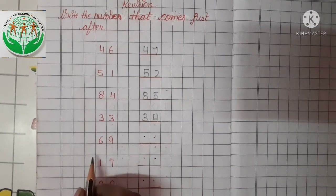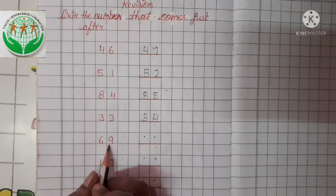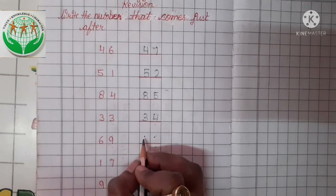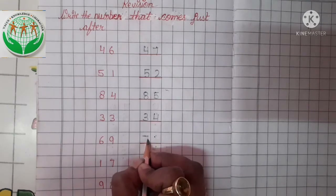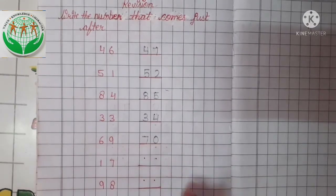Now see the next one. This is number — tell me what? Yes, this is number 69. So tell me, what comes just after 69? Yes, number 70. So we write here number 70.